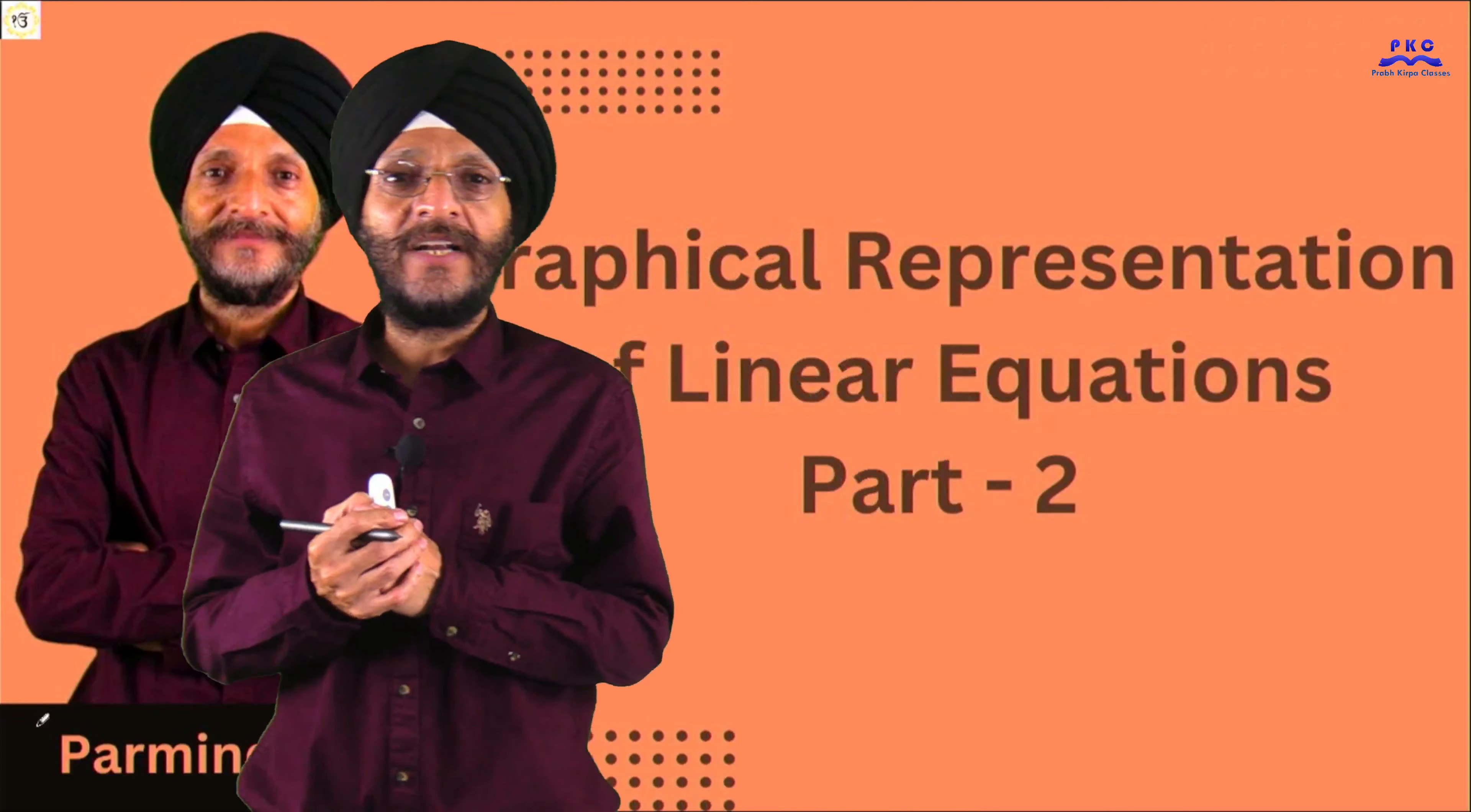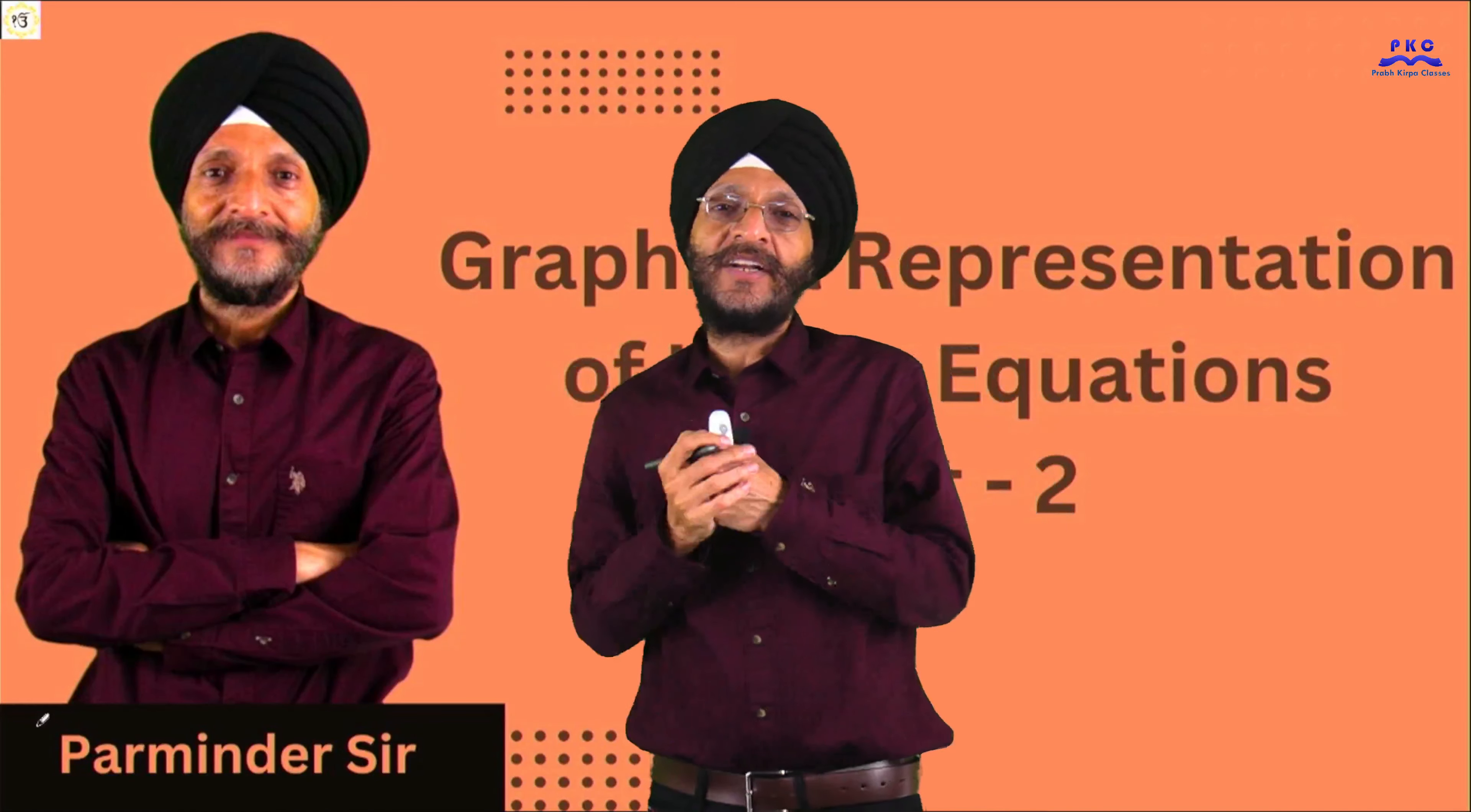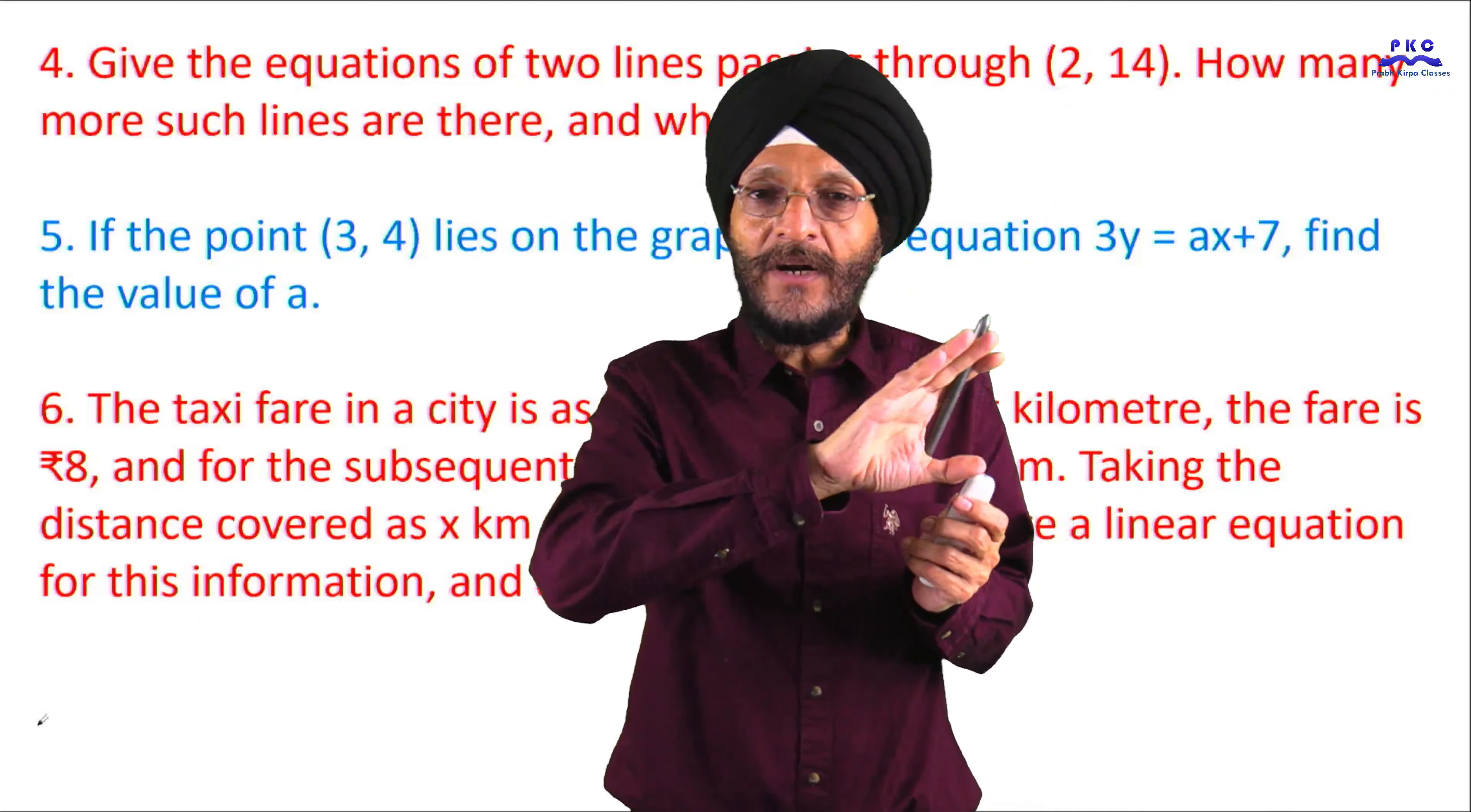As already told, in the case of linear equations, there is a word linear. The word linear means that when the equation is drawn on the graph, it forms a straight line. The equation means that the right hand side and the left hand side are equal. In part 1, we have solved these questions. These 6 questions have already been solved in our part 1.